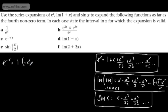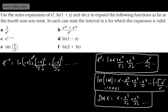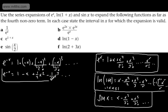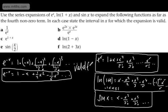So we get 1, then minus x, then plus minus x squared over 2 factorial, then plus minus x cubed over 3 factorial. We only want the first four non-zero terms, so e to the minus x is going to be 1 minus x plus one half x squared — since negative x squared gives a positive — then minus 1 over 6 x cubed. And that is valid for all x.